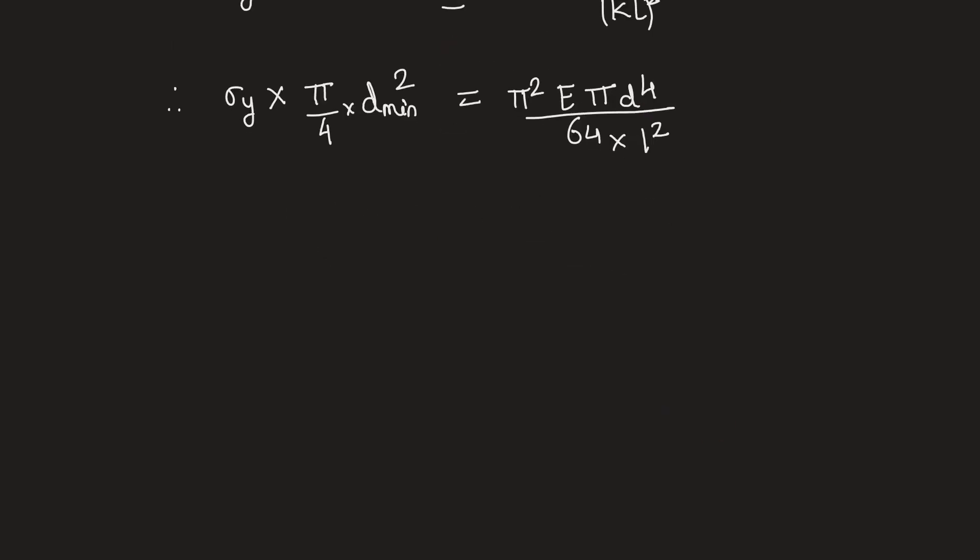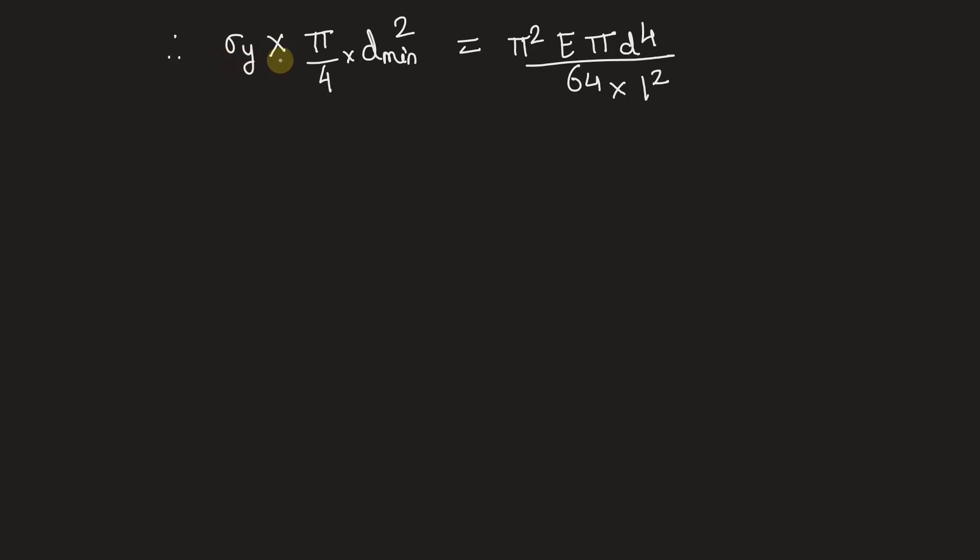Now in this equation we know the value of sigma y and pi is a constant. The one unknown is D minimum. We have another unknown that is Young's modulus. Young's modulus of the material is not mentioned anywhere in the question. We can use the graph to calculate Young's modulus.